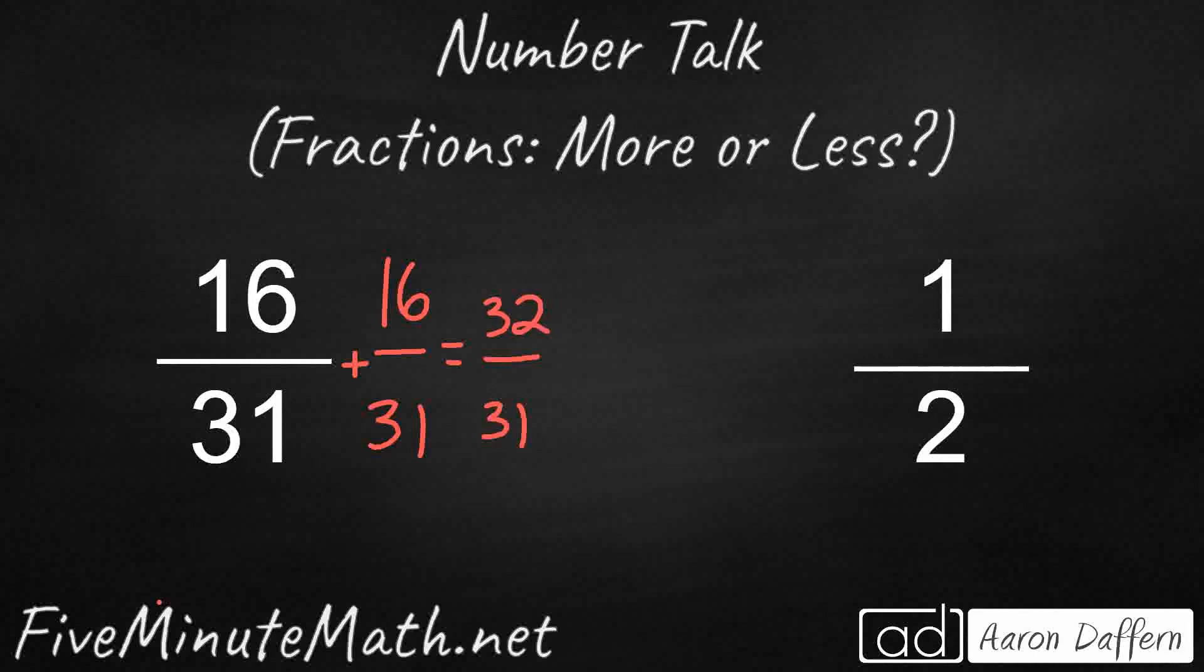So, take a look at this. If I were to double that 16 over 31, I'm going to get a little bit more than one. That's an improper fraction. It's one more than it needs to.